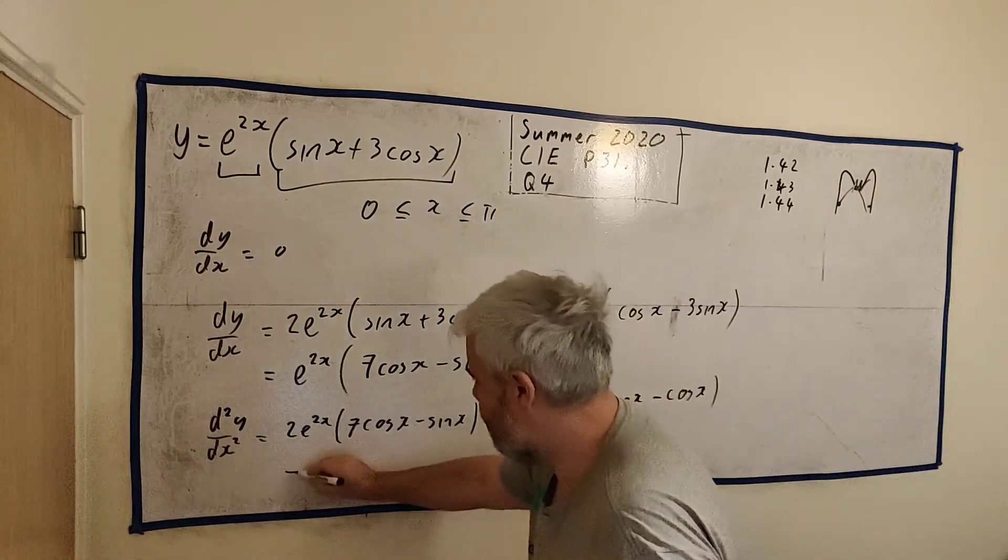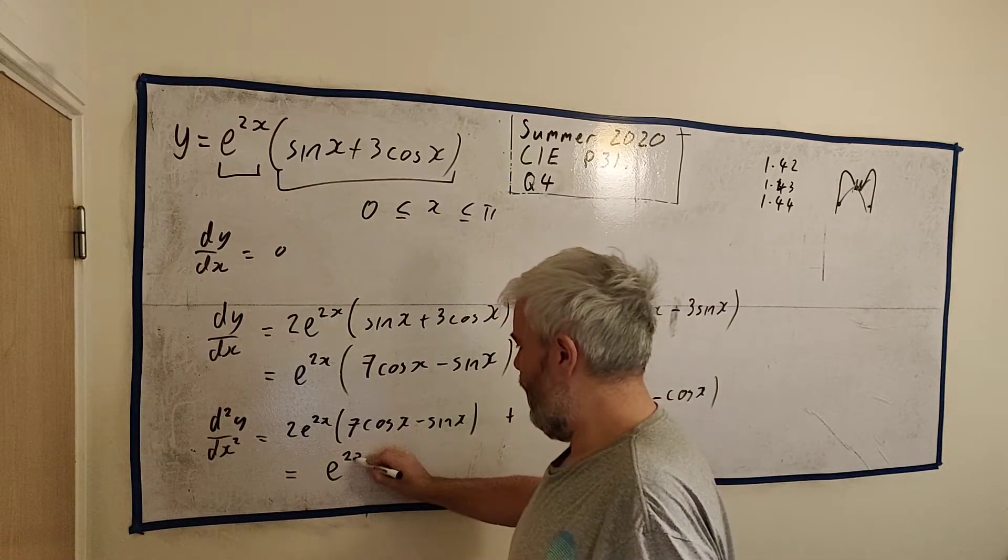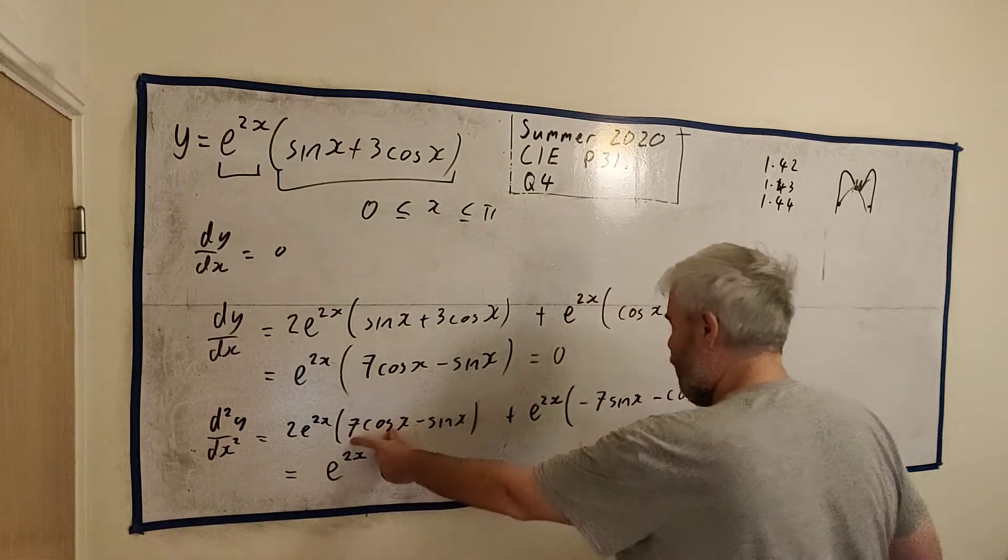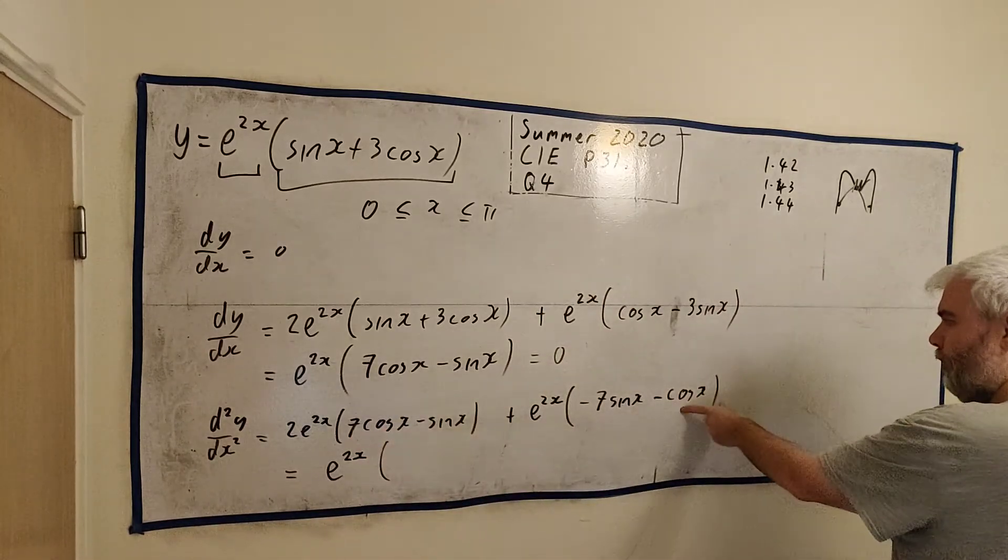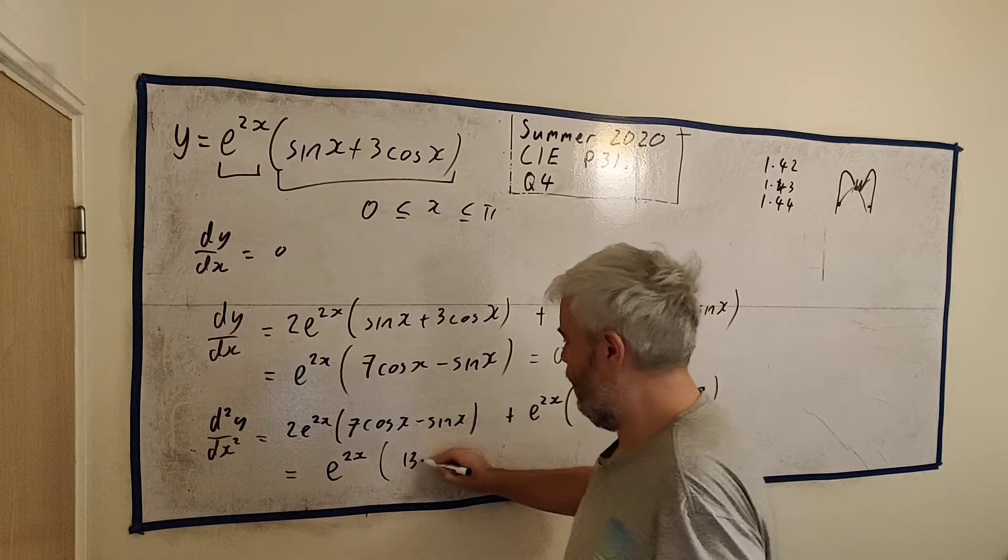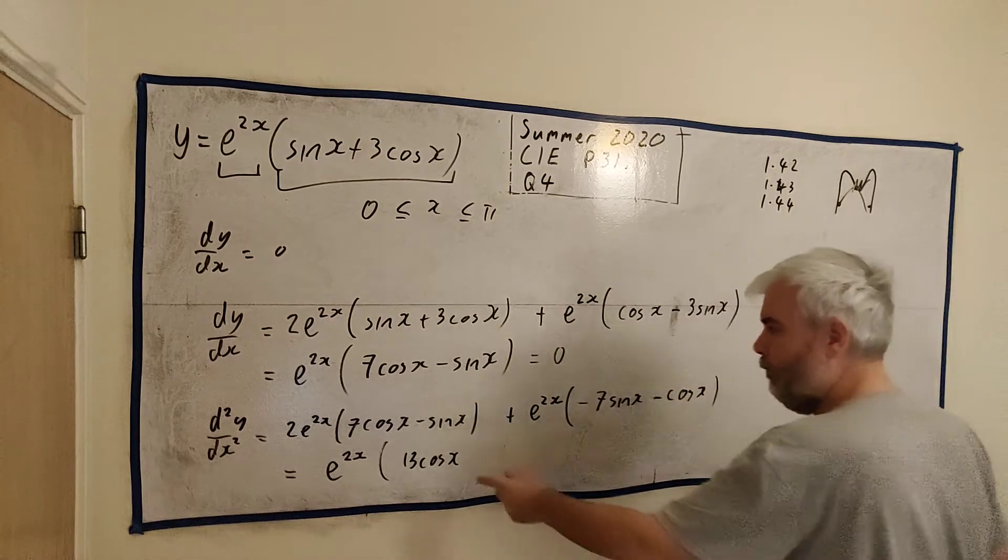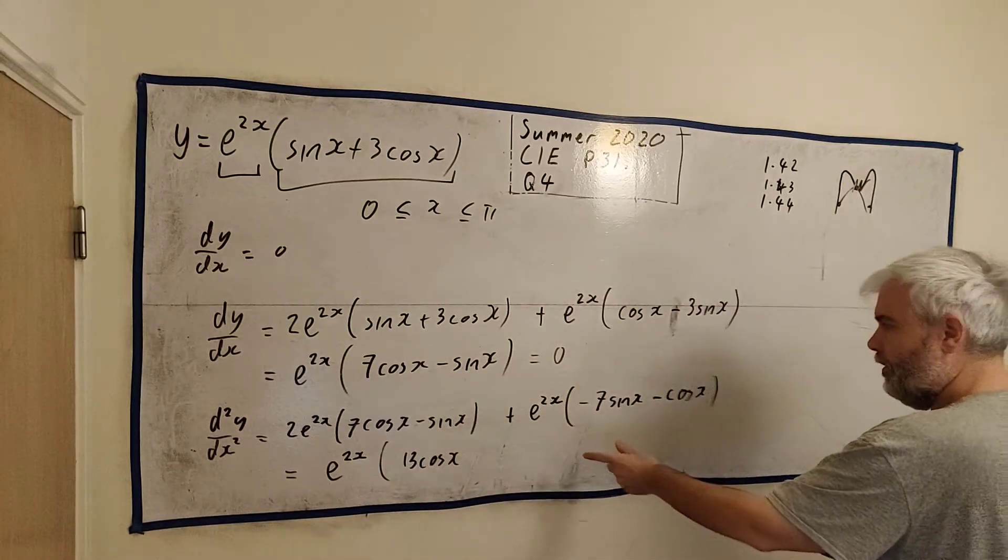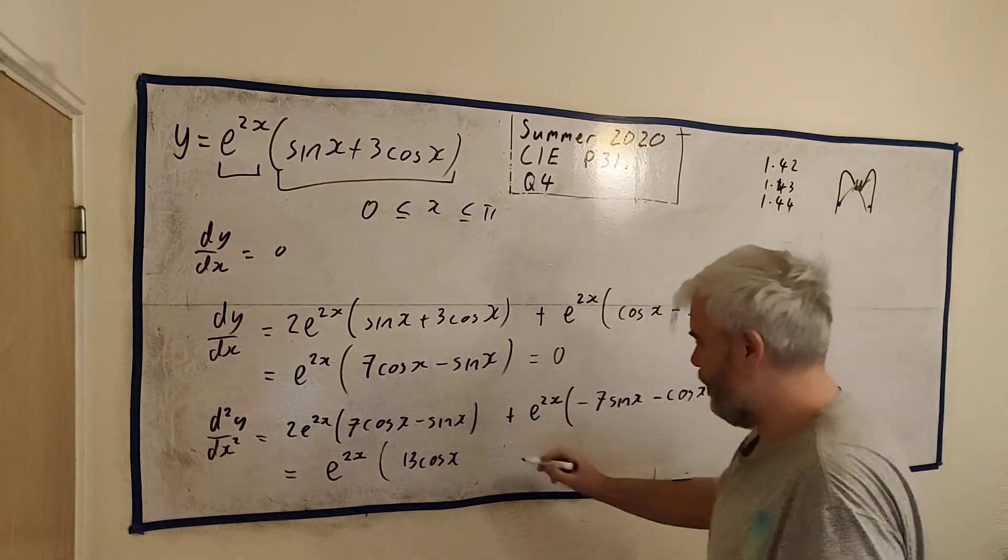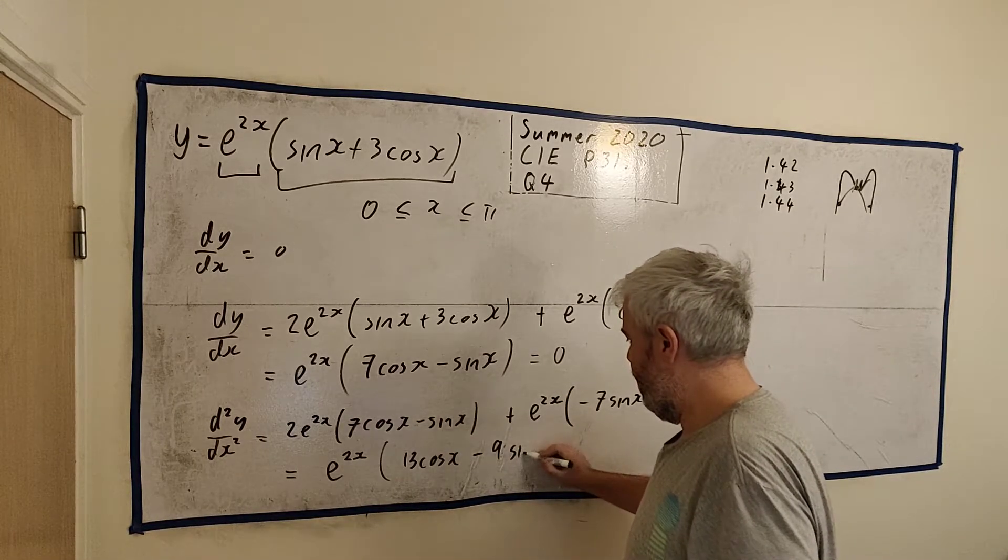Hopefully that was clear. We factor these. We'll get 2e to the 2x multiplied by 14 cosines minus 1 cosine, would be 13 cosine x's. And then we'd get minus 2 sines minus another 7 sines, we'd get minus 9 sine x.